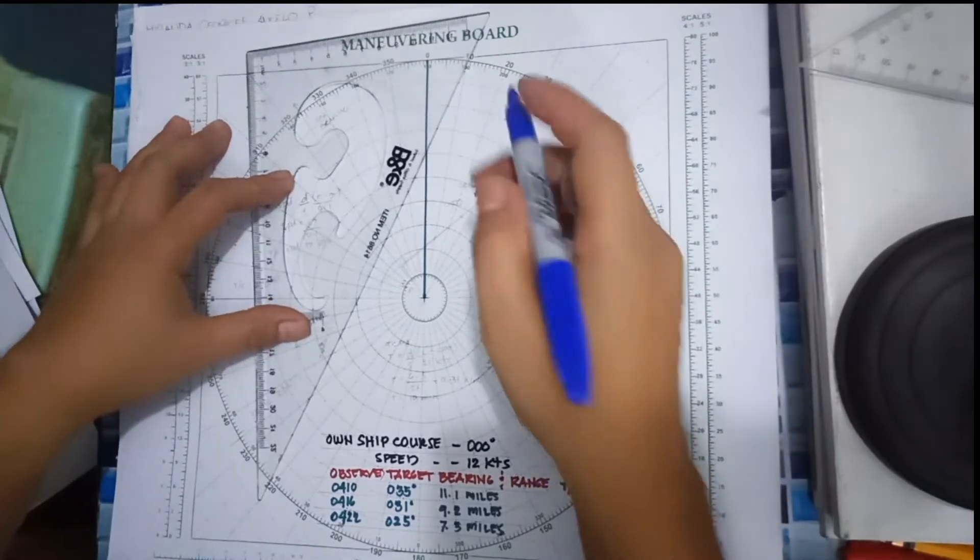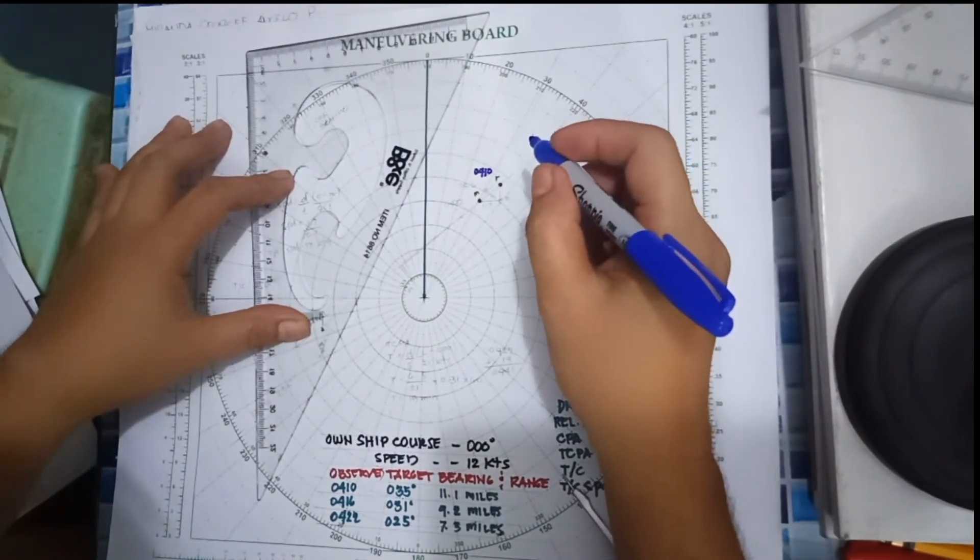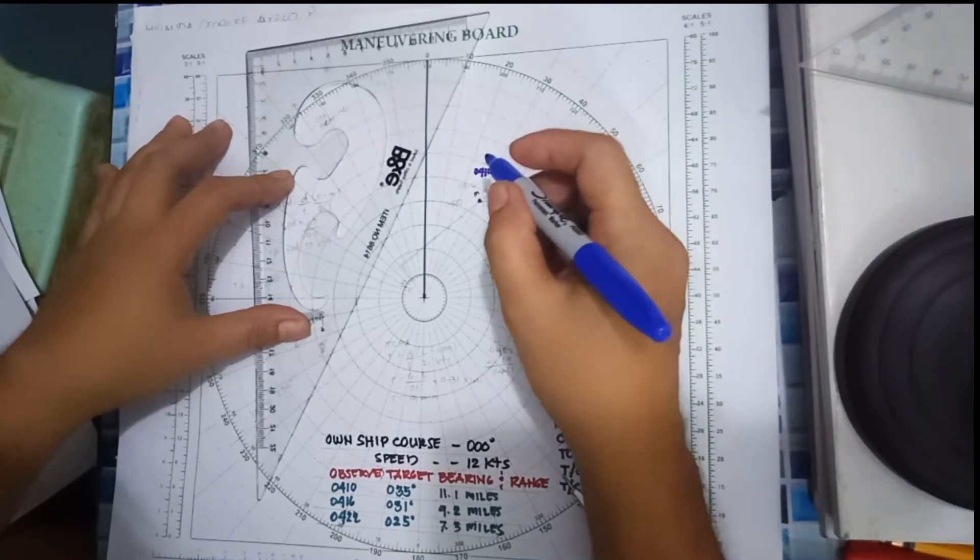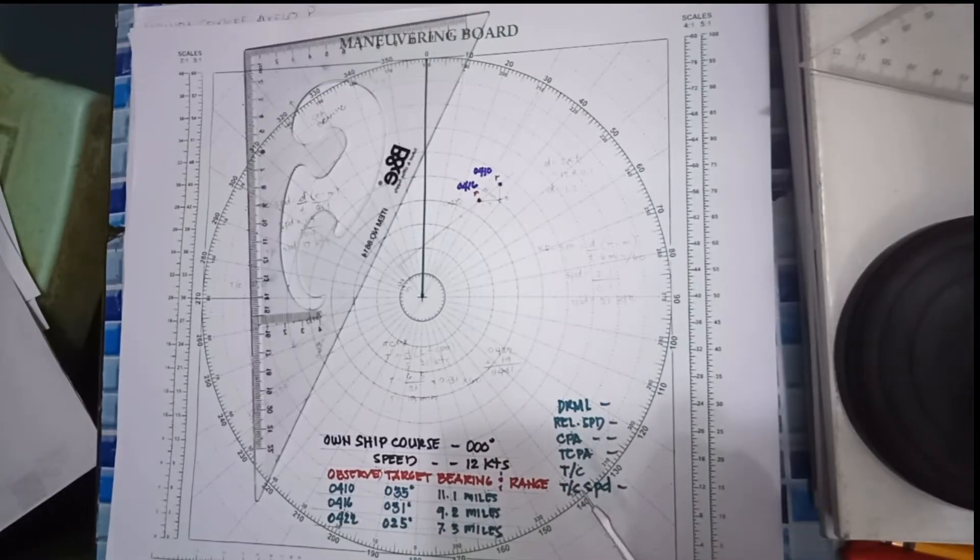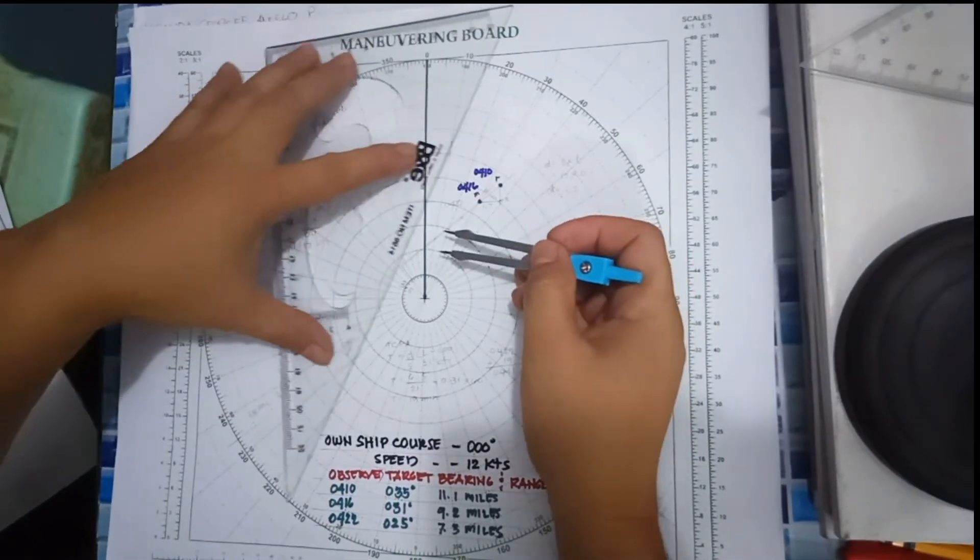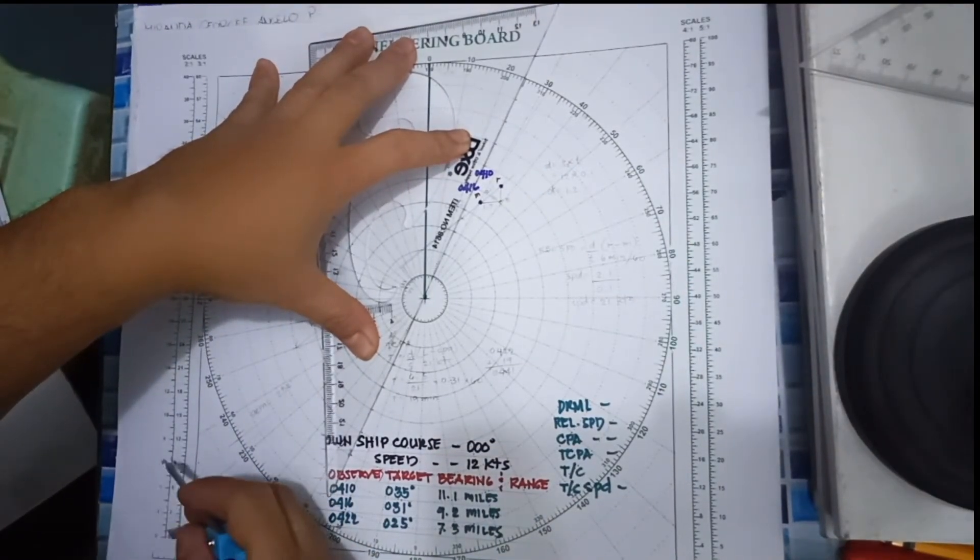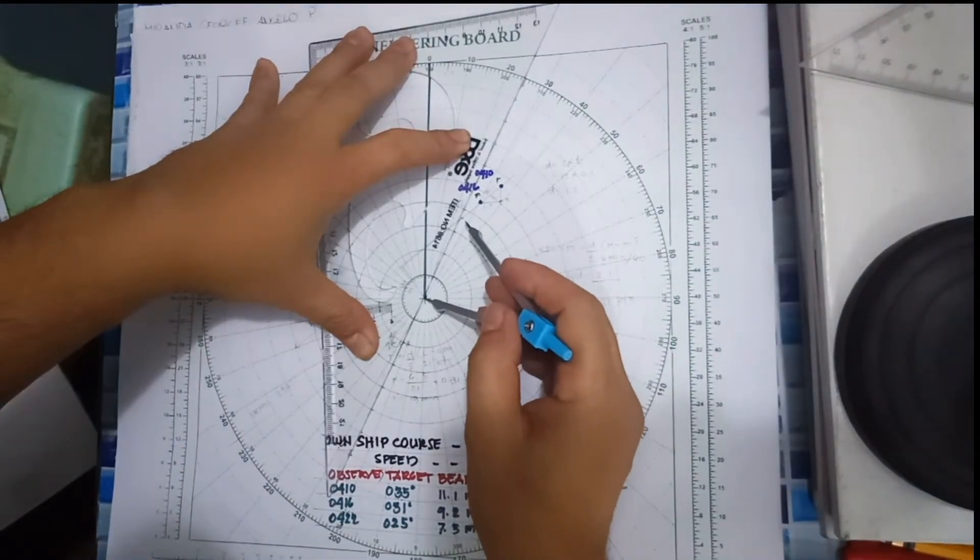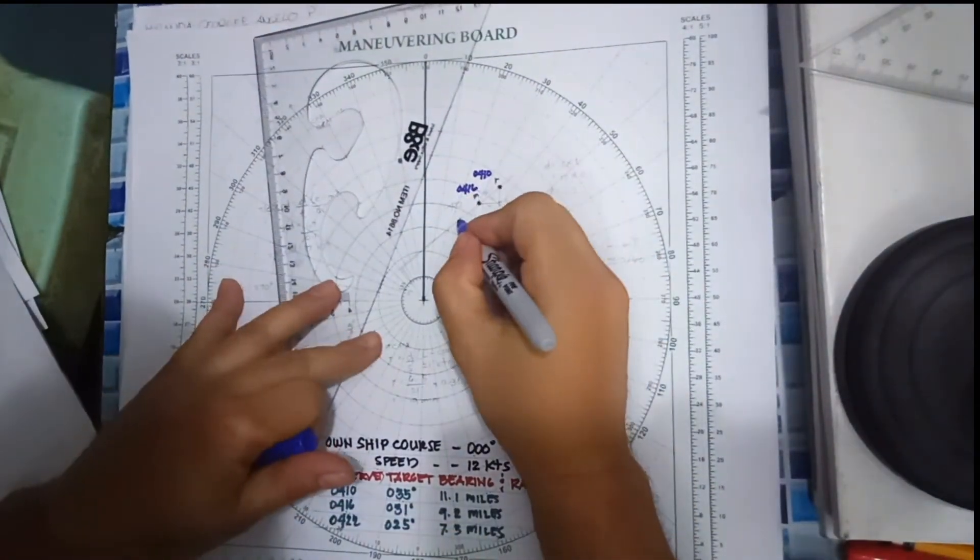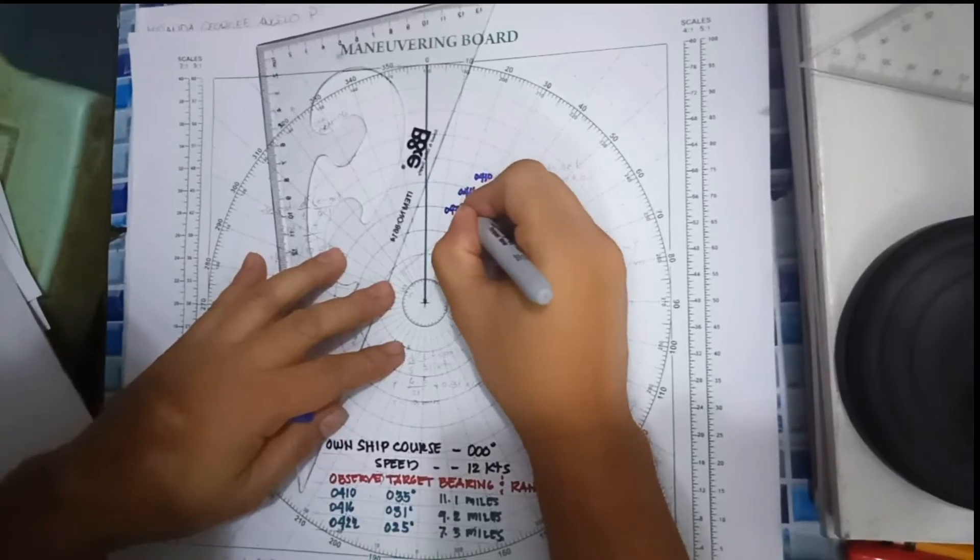By the way, on the first target the time is 0410, and the second bearing time is 0416. Now we are going to get the third bearing which is 025 degrees with a distance of 7.3 miles. So this will be your third bearing, the time of 0422.